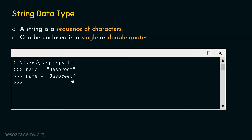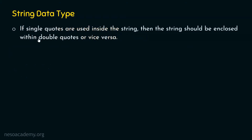Apart from these two points, we have one more important point. If single quotes are used inside the string, then the string should be enclosed within double quotes, or vice versa. If we are planning to use single quotes inside the string — let's say we want to add an apostrophe or enclose a substring within single quotes — we should wrap the entire string within double quotes. Or if we are planning to use double quotes inside the string, then the entire string should be enclosed within single quotes.